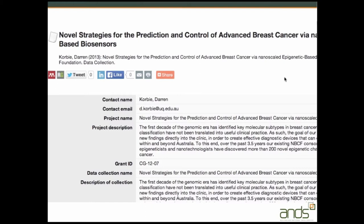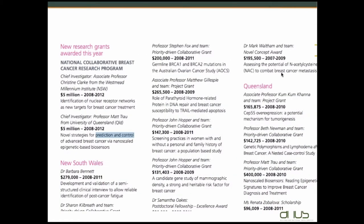Another slightly different example from the University of Queensland institutional repository does have a grant identifier in its metadata, but it's a local identifier and doesn't link through to anything. A Google search with the title of this article pulled up a PDF from the National Breast Cancer Foundation which lists all their research grant awards — the one highlighted is obviously the grant referred to by the ID CG-12-07 in the article metadata. So what we need is a globally unique identifier for funders such as the National Breast Cancer Foundation, and for individual grants, made available through central aggregation, so the article metadata could link to a grant identifier that resolves to details about the research award.